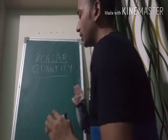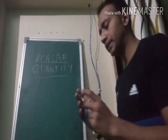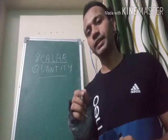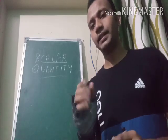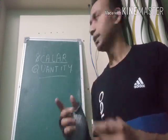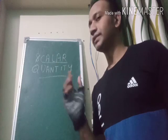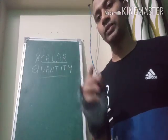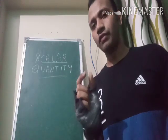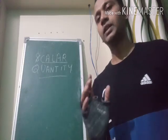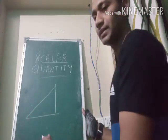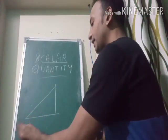In the previous videos we studied quantities like distance, displacement, velocity, and speed — these are the four physical quantities we have studied. A quantity which requires only a magnitude or a number for its description is called a physical quantity.